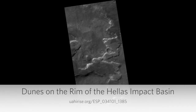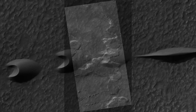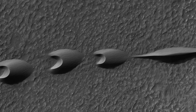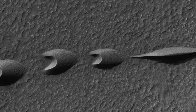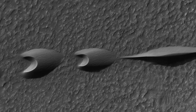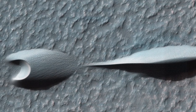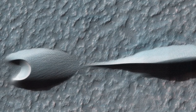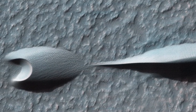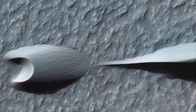Dunes on the rim of the Hellas Impact Basin. Sand dunes like these in this image have been observed to creep slowly across the surface of Mars through the action of the wind. These are a particular type of dune called Barchan, which forms when the wind blows in one direction for long periods of time. Barchan dunes are common on Mars and in the desert regions of the Earth.